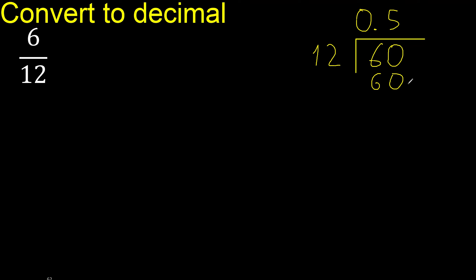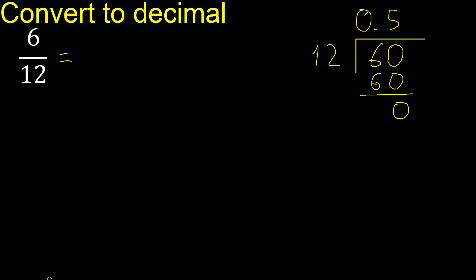60 is not greater. Subtract: the result is 0. Finish, because there is no number that goes down. Division is complete.